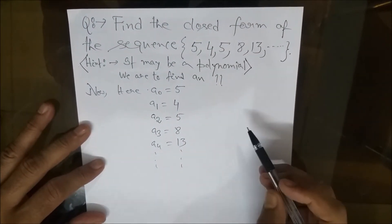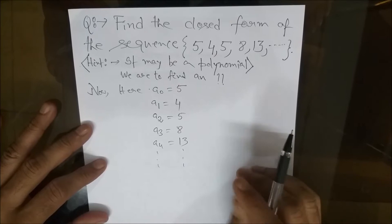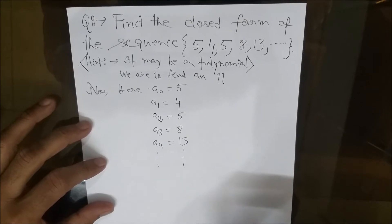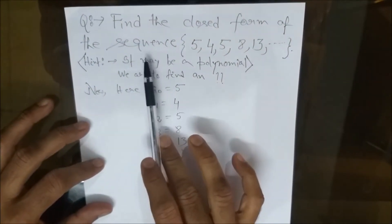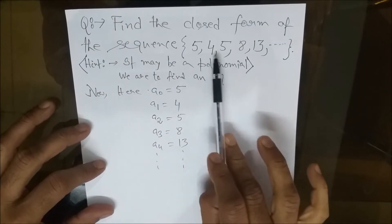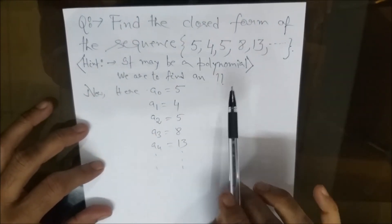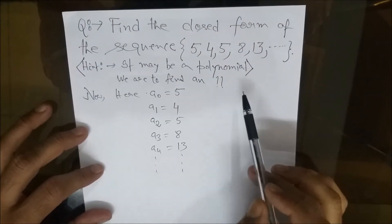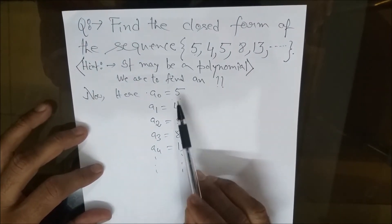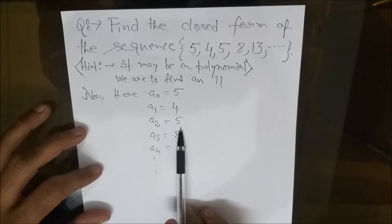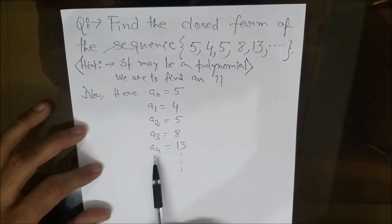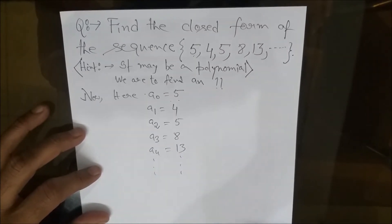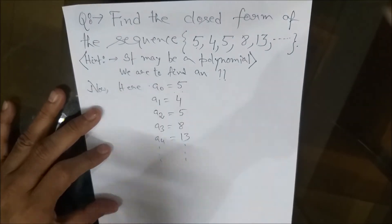Hi students, today we are discussing a very intricate and interesting problem of finding the closed form of a sequence. The sequence is given here: 5, 4, 5, 8, 13, 30. We have a0=5, a1=4, a2=5, a3=8, a4=13, and so on. We need to find a(n) in terms of n — that is called the closed form.